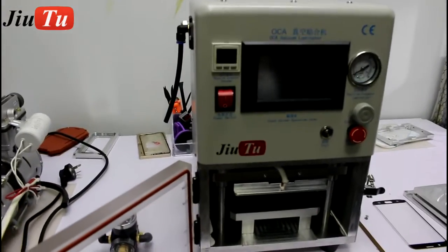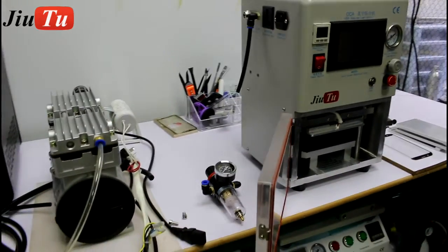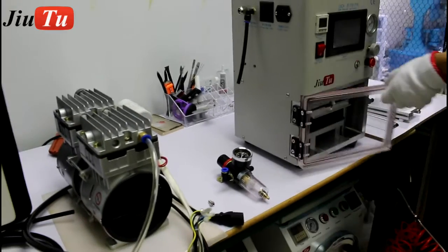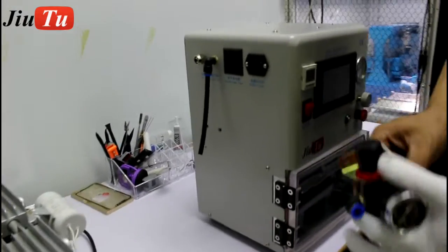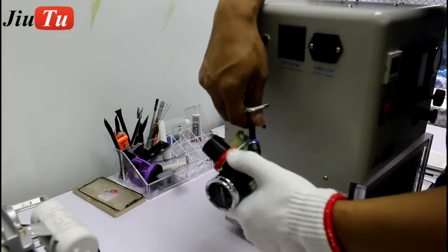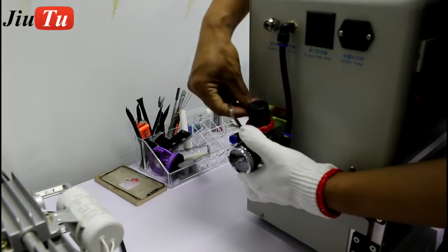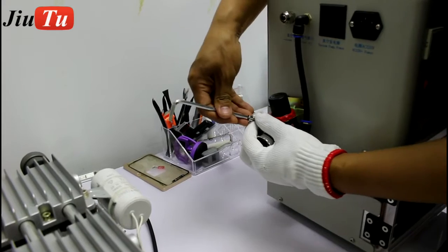This is the new H-OCA vacuum laminated machine. It will need to connect with external vacuum pump and air compressor. This is the filter. We will disassemble before shipment in order to protect it.